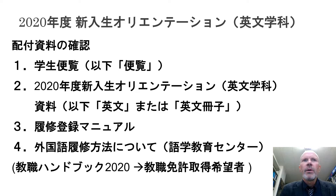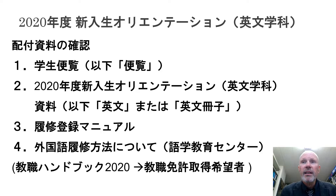You should have had some information already. If you haven't because you couldn't make it to the university, we'll make sure those documents are online. You can see there's the student manual — number one — that's quite important. There's also information specifically for the English department — number two — and also very important is the registration manual, which you have to follow carefully because you have to register for your classes. There's also specific information for the foreign language centre and for people who want to become teachers in the future — the teaching licence.